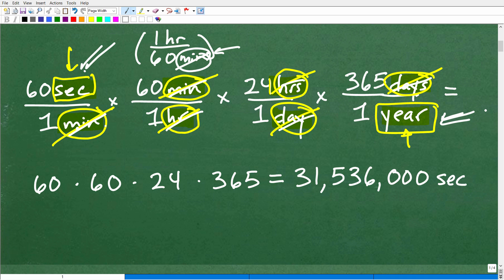All right, so now if I look here, I have 60, 60, 24, and 365. So I have to multiply all these together, 60 times 60 times 24 times 365. That leaves you with 31,536,000 seconds over one year. So that's how many seconds are in one year.